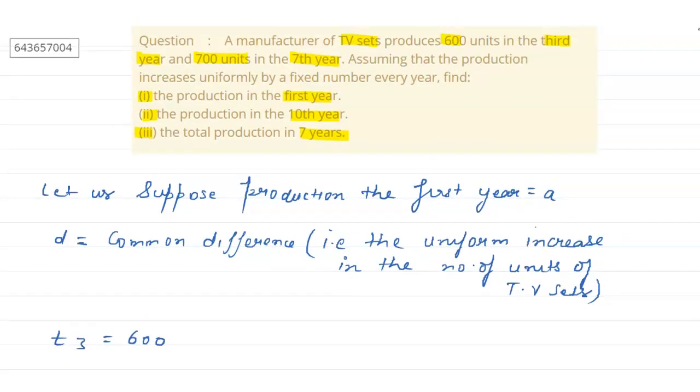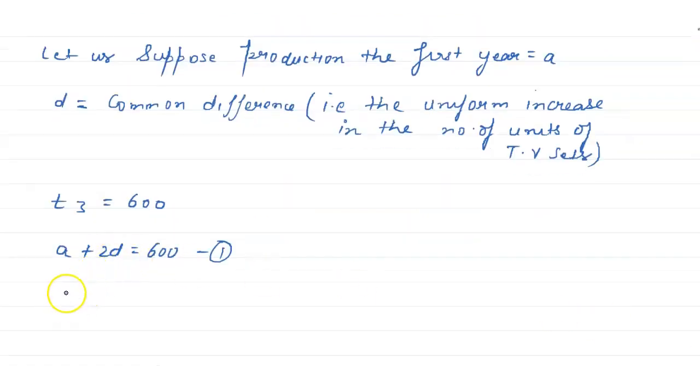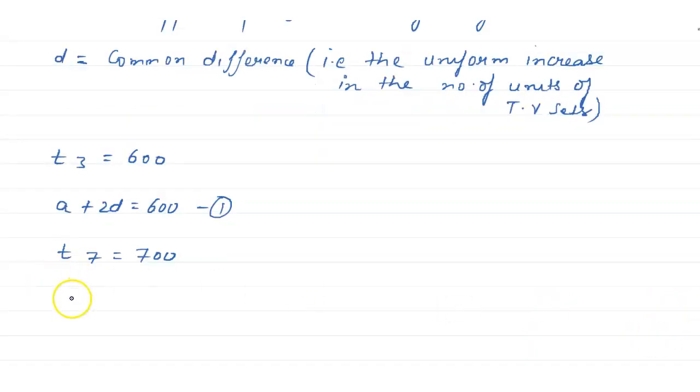The production in seventh year is 700. So t7 is given as 700. So a plus 6d is equals to 700. Mark it as equation number second.